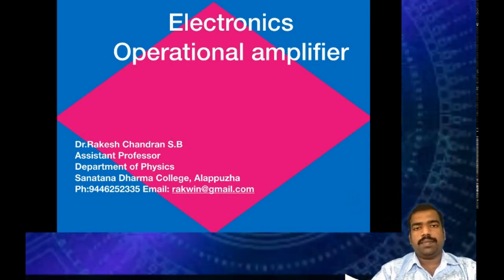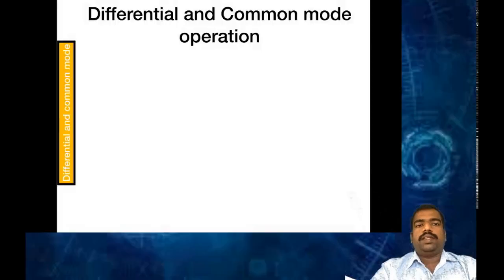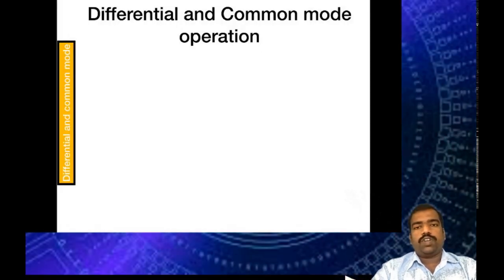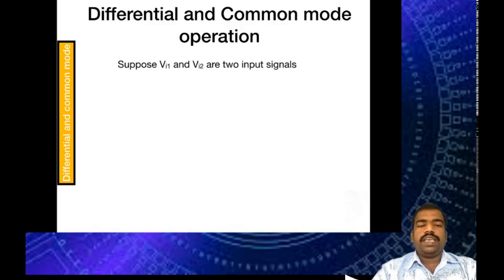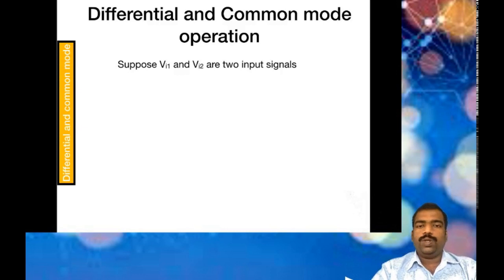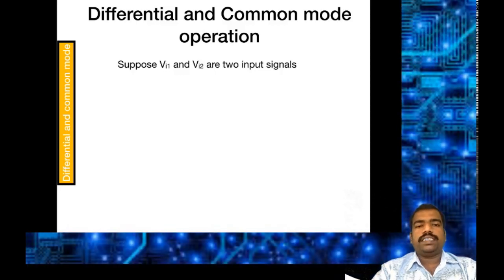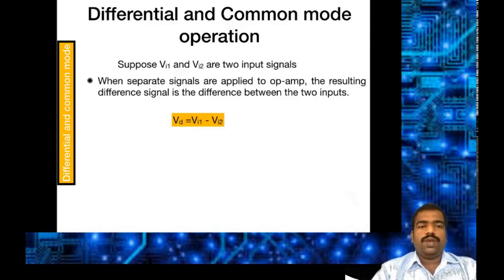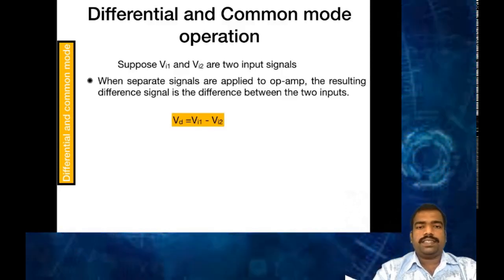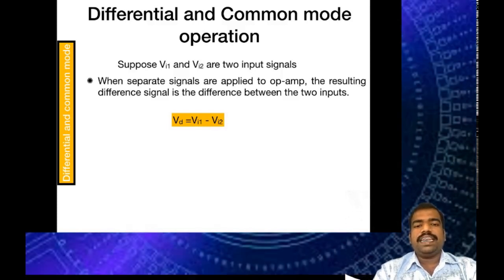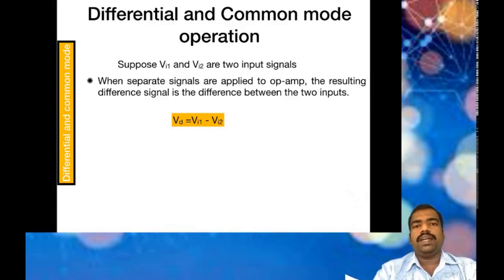This is the differential and common mode operation of the operational amplifier. Suppose vi1 and vi2 are the two input signals. When you apply different signals at these two inputs which are out of phase — these two signals are separate signals — the resulting differential signal is the difference between these two inputs.